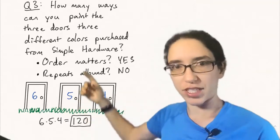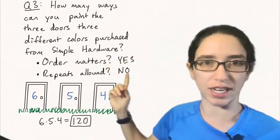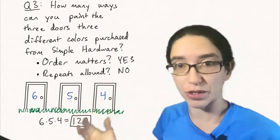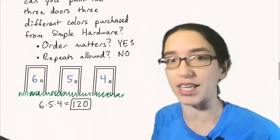So again we change these parameters again to yes and no this time and we got a different answer than either of the previous two answers. We're still choosing three things from six things but in a different way.